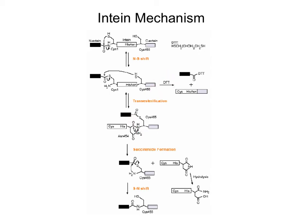If you add DTT at this step, the DTT attacks and forms a covalent bond, separating the C-terminal extein from the intein. After this transesterification, you have succinamide formation where electrons from the amide come in, nucleophilic attack occurs, electrons come up and down, kick off the intein. This leaves the two exteins still as a thioester, but then intramolecular interaction with the amine — electrons come up and down on the oxygen, this S-to-N acyl shift — leaves a seamless amide bond with the two exteins together.